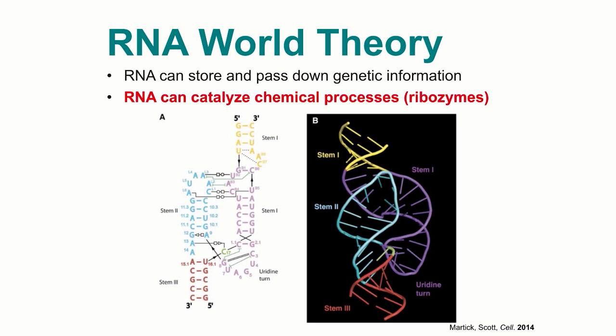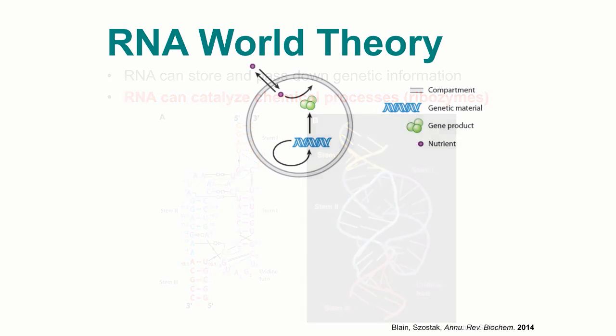So in an early living system, let's consider one which contains a compartment, nutrients, the gene product, and a genetic material which is RNA that produces the gene product. Now, in order for this living system to replicate and evolve, the genetic material RNA must also, in turn, be able to replicate and evolve.